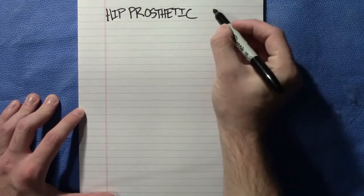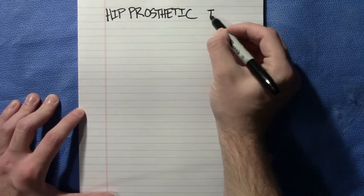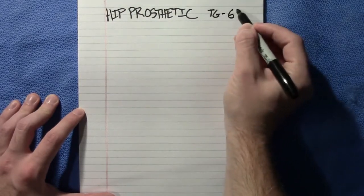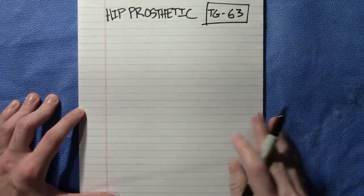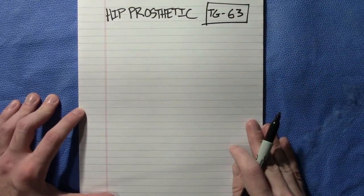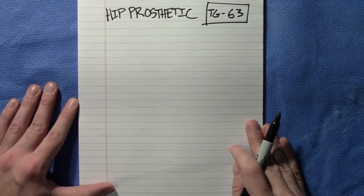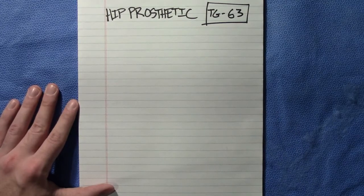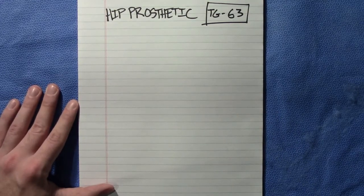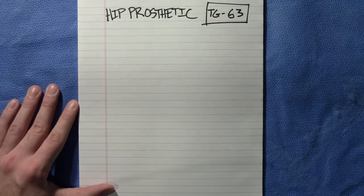The first thing that should pop in your mind is TG-63, because this is the task group that discusses hip prosthetics — how they are affected by radiation and what steps you should take to ensure safe treatment with these types of devices in the body. The next question would be: what effect does it have with a radiation beam going through it?